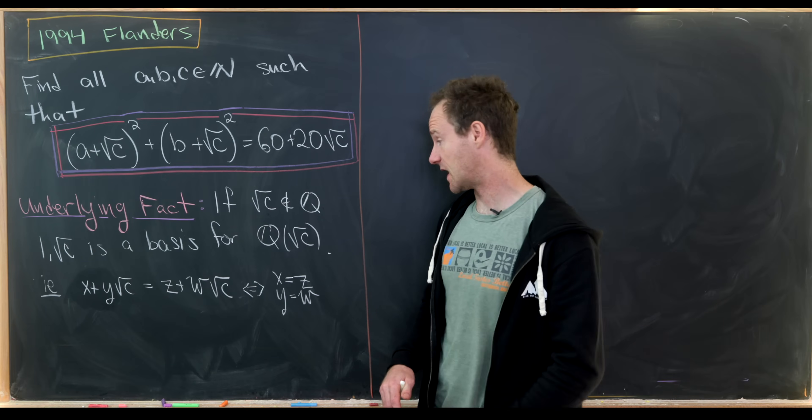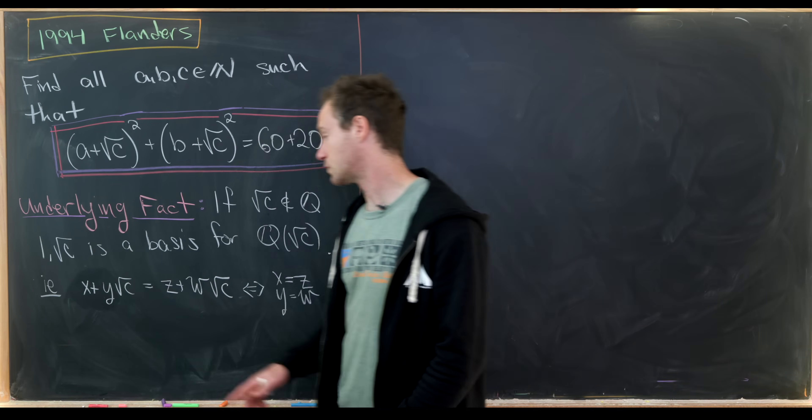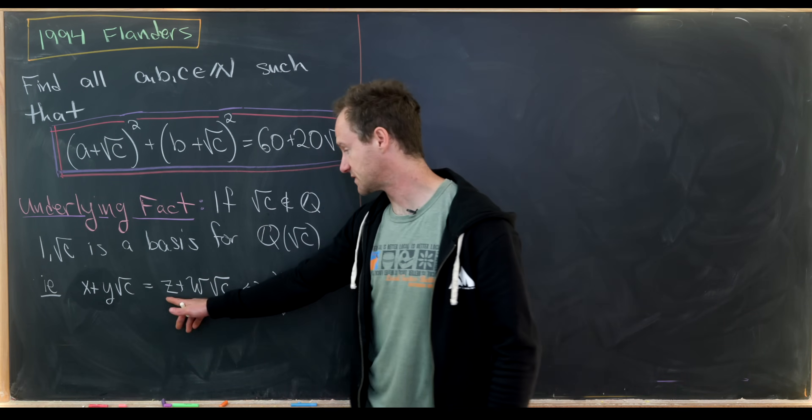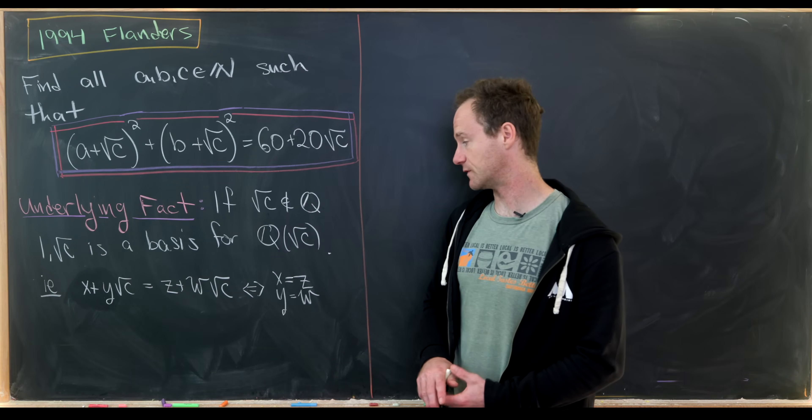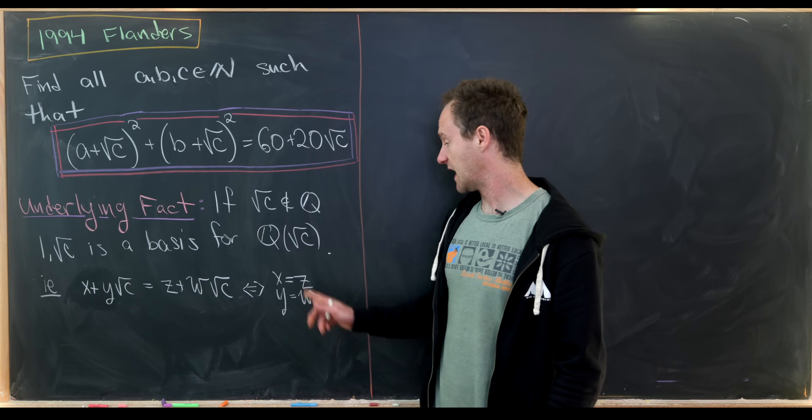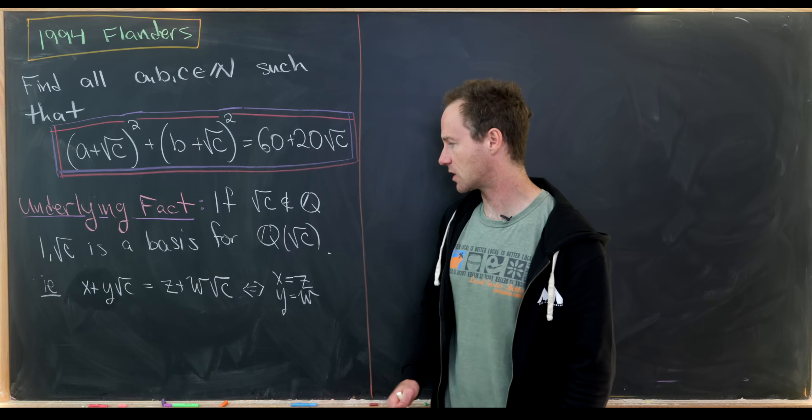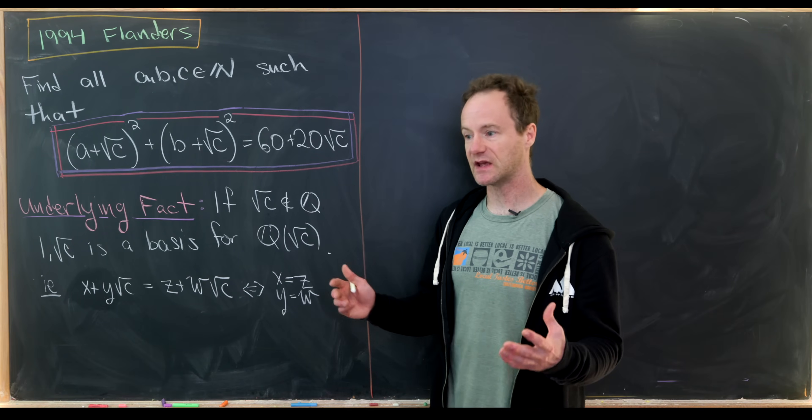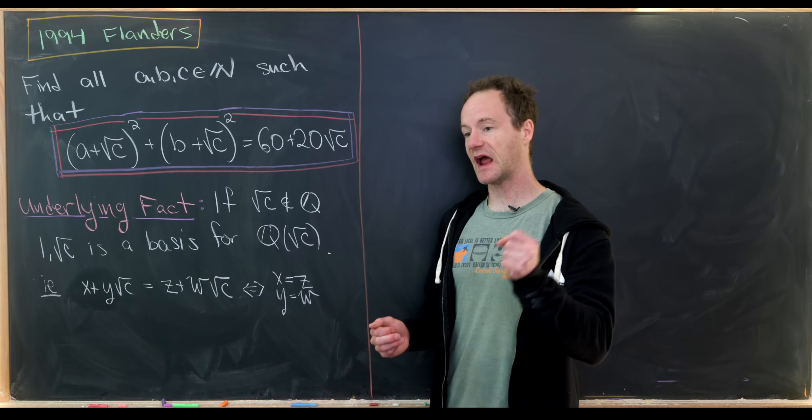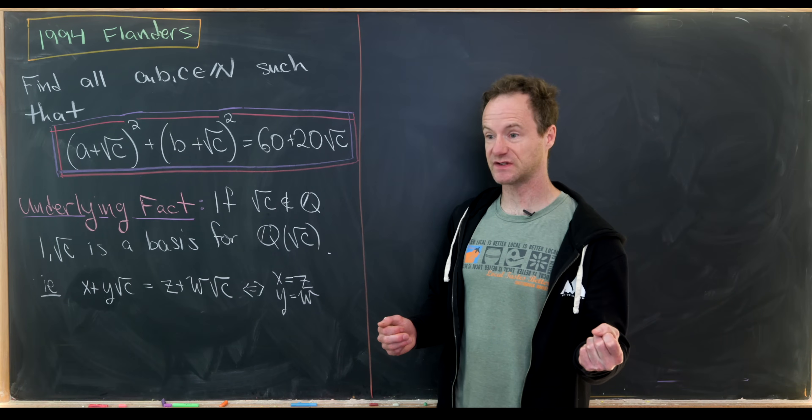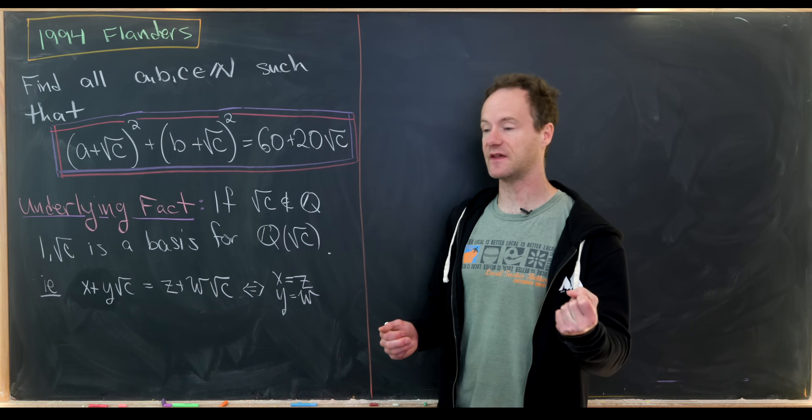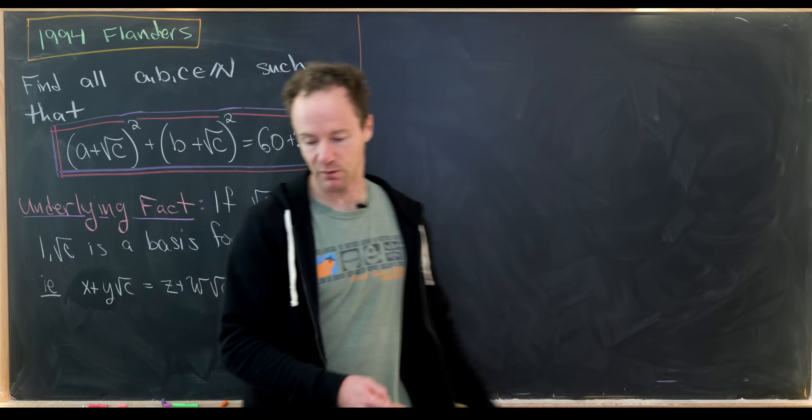And that immediately implies that if x plus y square root of c equals z plus w square root of c, then x equals z and y equals w. And in fact, these two statements are equivalent. So that means we can build our equation and then extract the coefficients of the square root of c and then just the numbers. And that's exactly what we'll do.